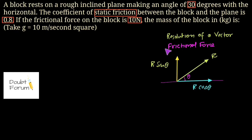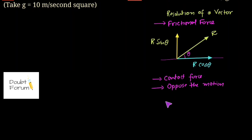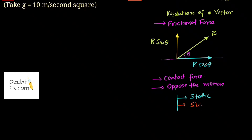The second concept used here is frictional force. Frictional force is a contact force and it will always oppose the motion. There are three types of frictional force: the first is static friction, the second is sliding friction, and the third is rolling friction.